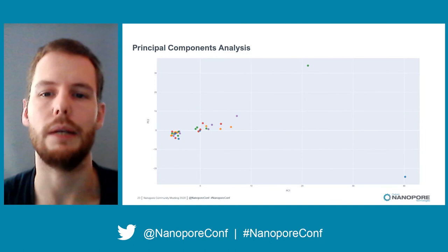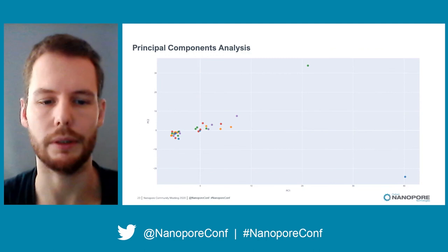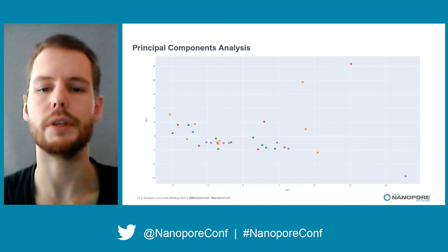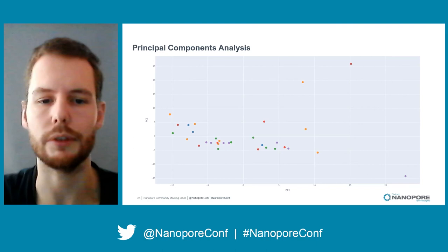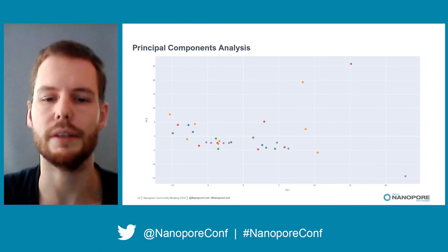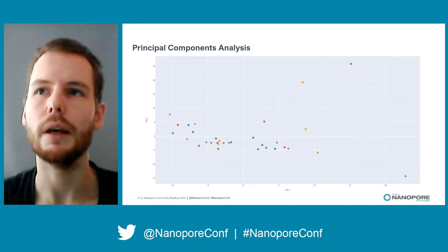Looking at the principal component analysis, this shows two notable outliers, which are presumably due to technical reasons, but I can't really identify the cause at this moment. I assume if we sequence more samples that this might become clear. Repeating the PCA without the outliers shows that the colors, representing different subgroups of patients with green being healthy controls, are not separated by subtype. This is very good news, because what I'm looking for is not a large difference between patients and controls, but rather a discrete, specific locus causing a difference between a subgroup of patients and the controls.